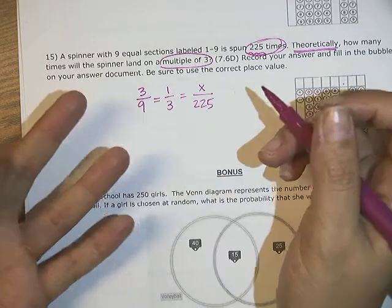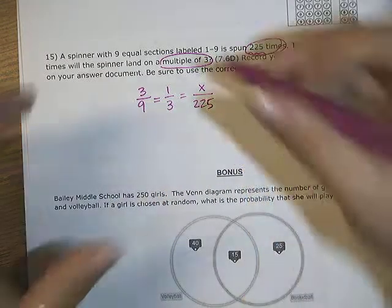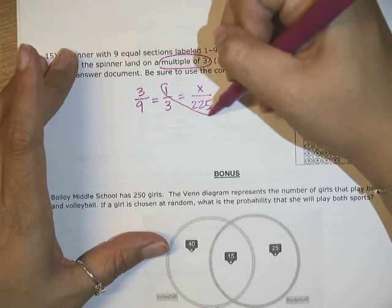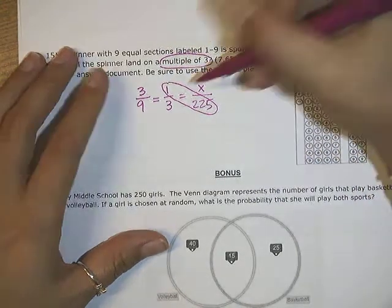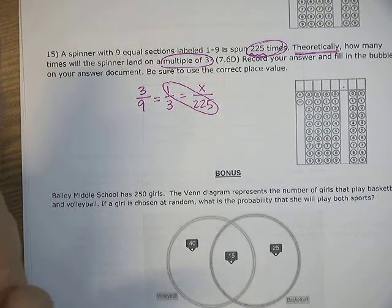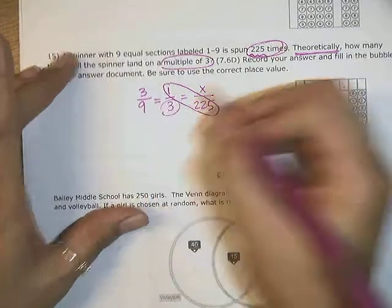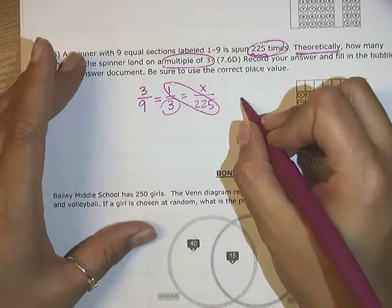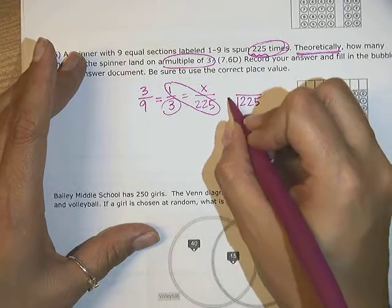This is not pretty, but I kind of just have to do the work. I'm going to multiply 225 times one, which is super simple. That's 225. And then I'm dividing by this lonely number right here. So 225 divided by three.